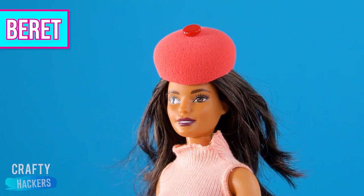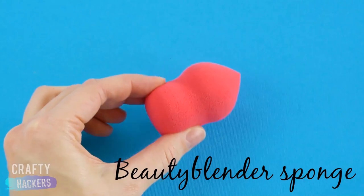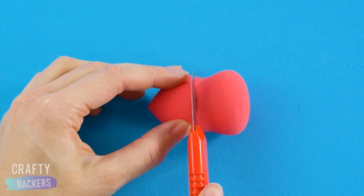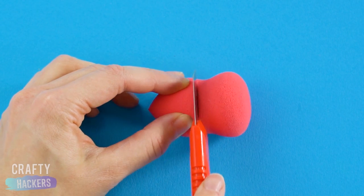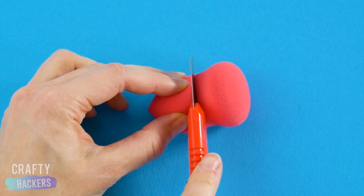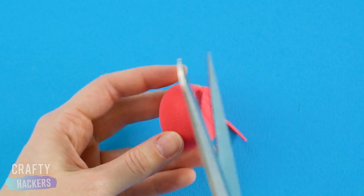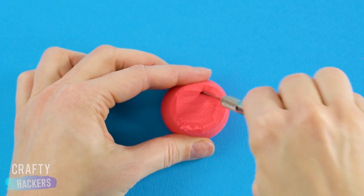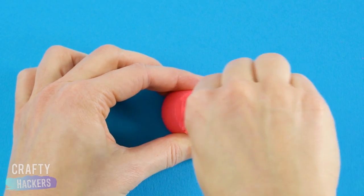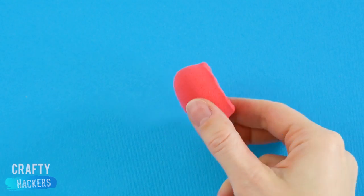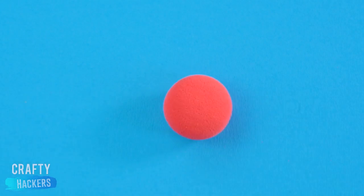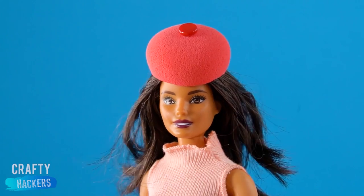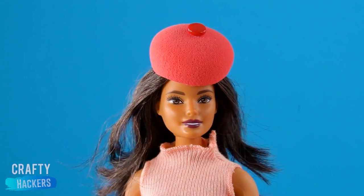Beret. Want your Barbie to have her own red beret? Check it out! You know those beauty blender sponges from the drugstore? Well, get yourself a red one. Have mom or dad help you cut the sponge in half with an exacto knife. Use scissors to trim it down to beret size. You'll need to cut out a spot for Barbie's head, too. So far, so good! Now, have your parents hot glue a red bead on top. And voila! A stylish red beret for Barbie!